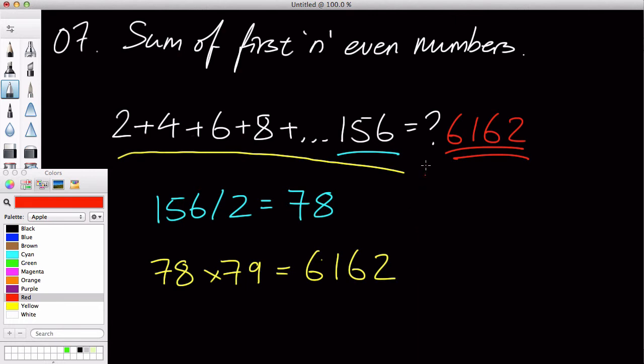Basically, what you do is get the biggest number, divide it by 2, add 1 to it, and then multiply that number plus 1. And the result is basically the answer to this question.